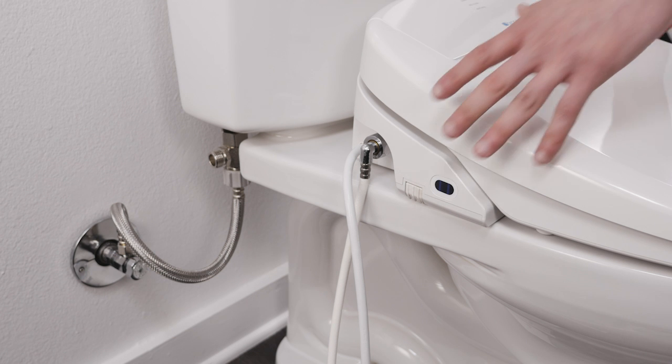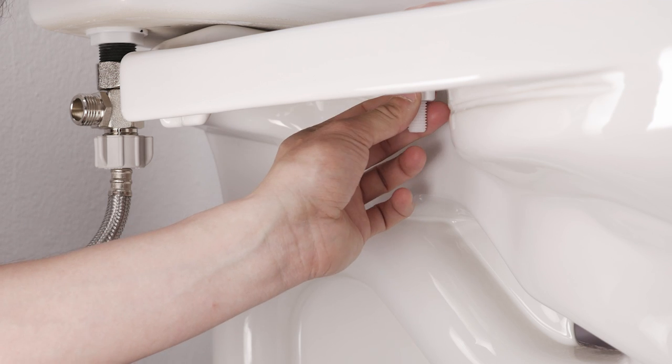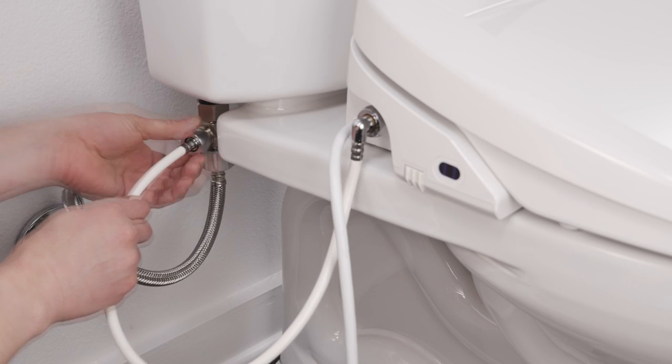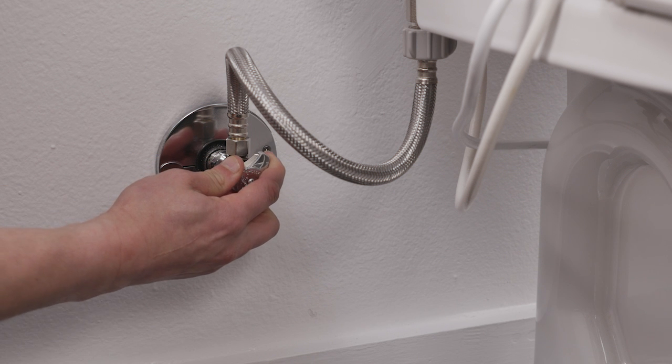To adjust the position of the seat, slide the seat forward or backwards for the best fit and tighten the nuts under the toilet. Connect the open end of the Bidet hose to the T-valve. Turn on the water supply and check for leaks.